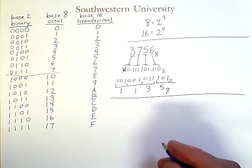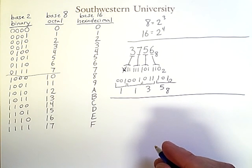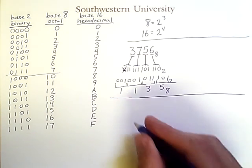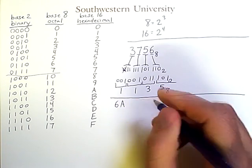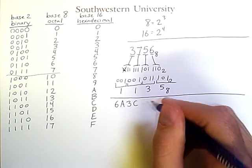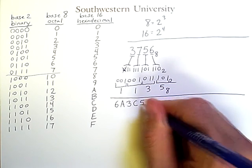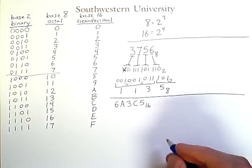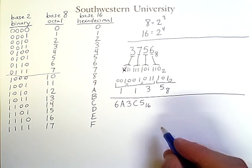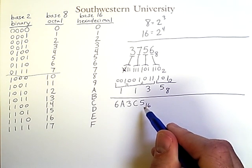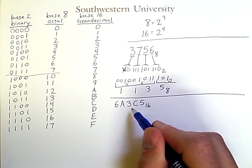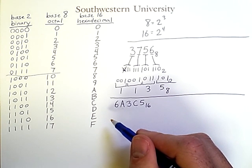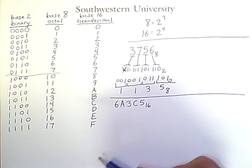Conversion to and from hexadecimal is similar, but uses groups of 4 bits. For example, the hex number 6A3C5 in base 16 can be converted to binary by treating each of these digits as 4 bits, keeping in mind that these letters are simply placeholders for numbers that, in decimal at least, cannot be represented using only one digit.